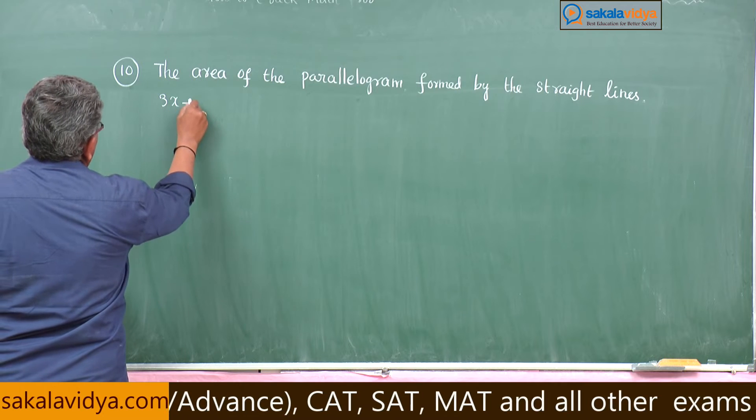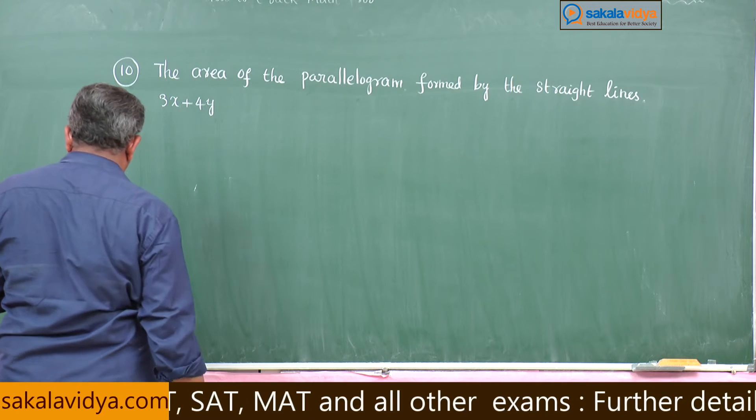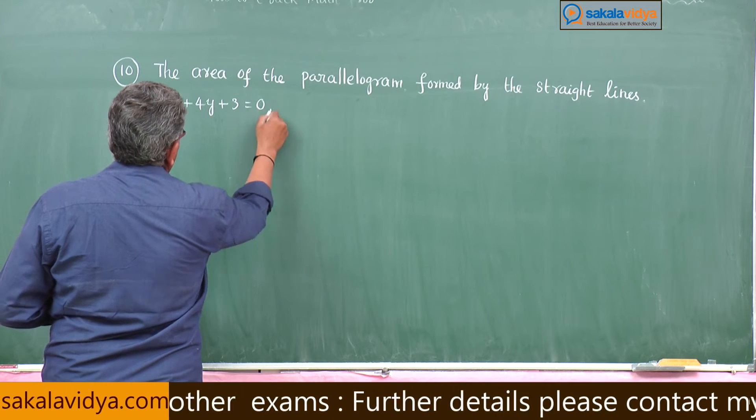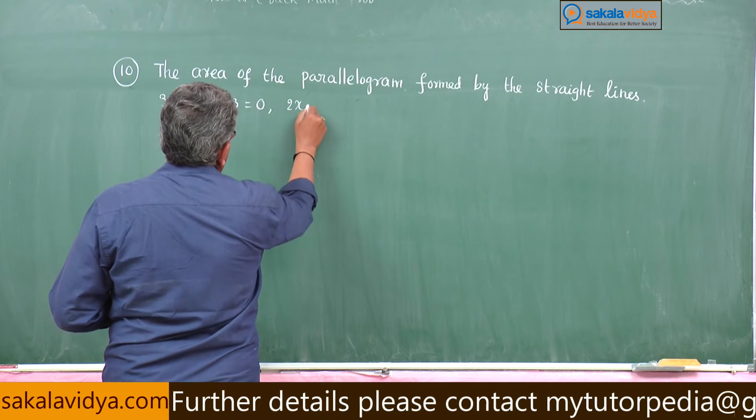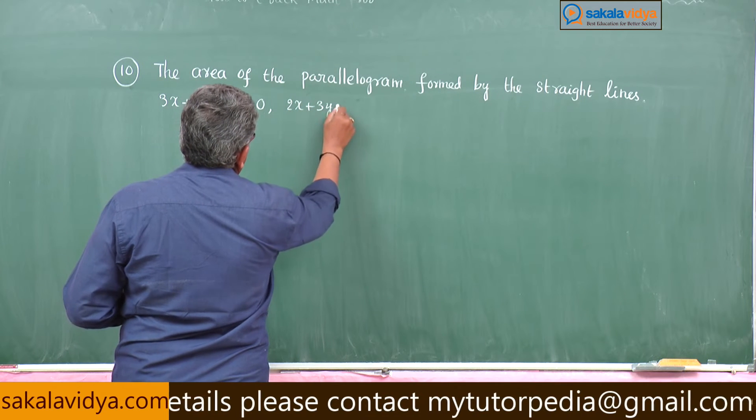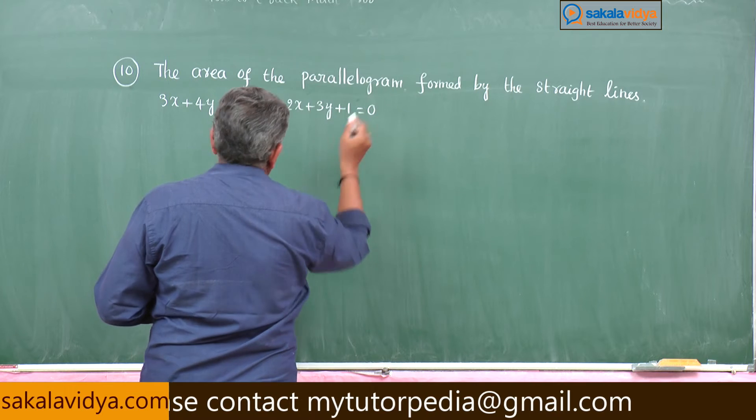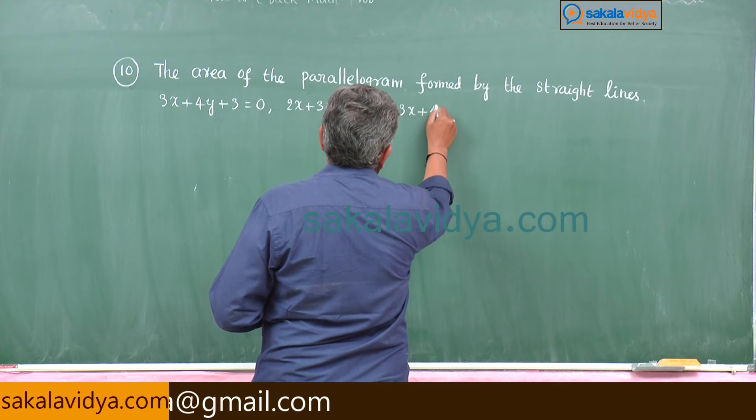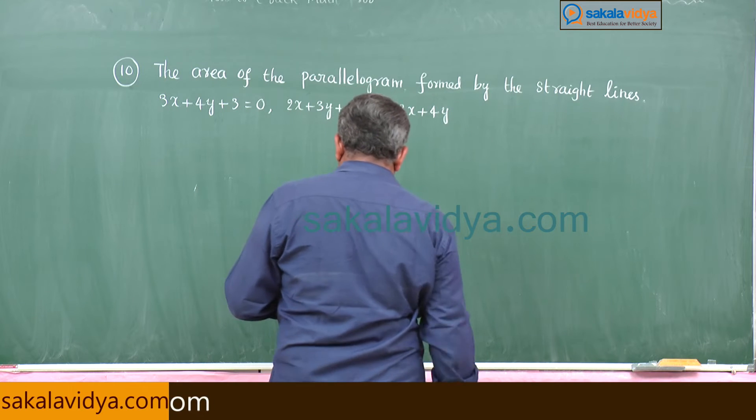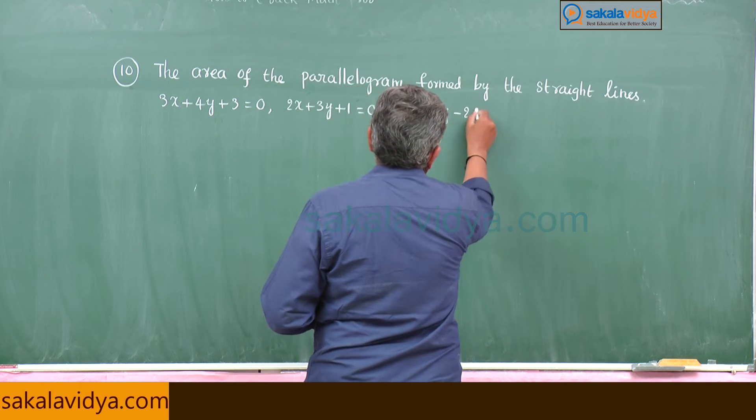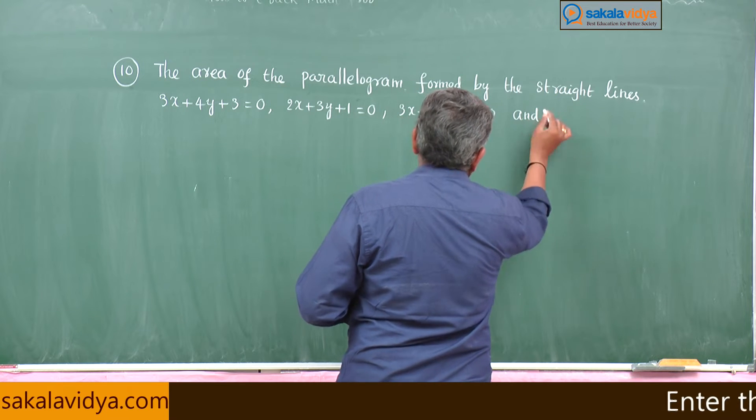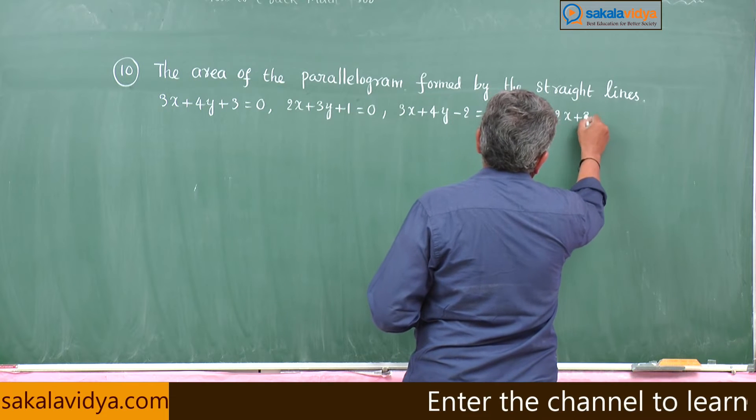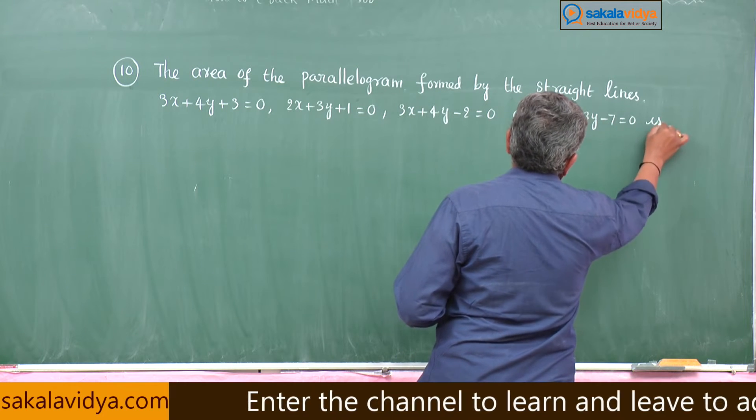3x plus 4y plus 3 is equal to 0, 2x plus 3y plus 1 is equal to 0, 3x plus 4y minus 2 is equal to 0, and 2x plus 3y minus 7 is equal to 0.